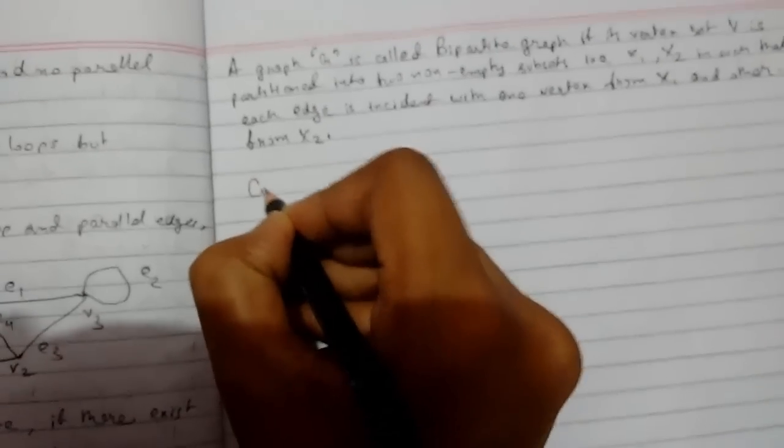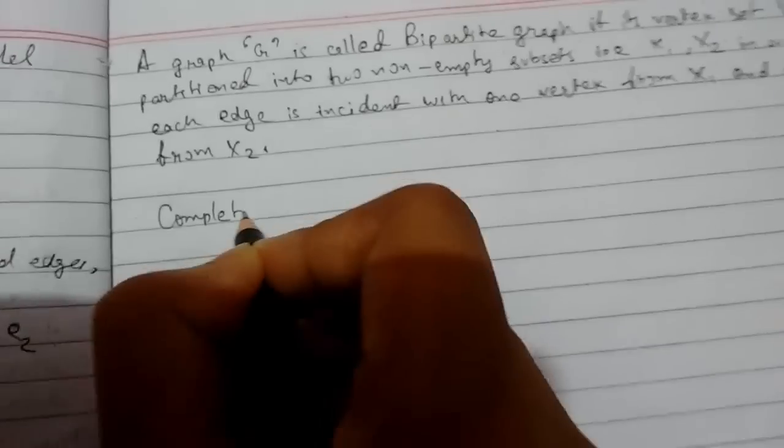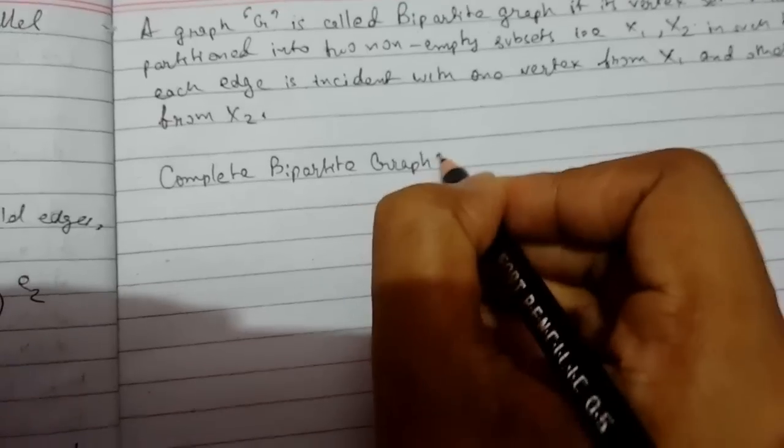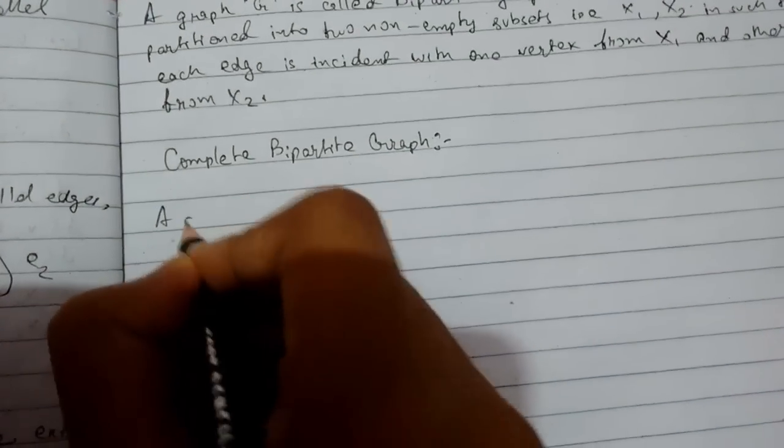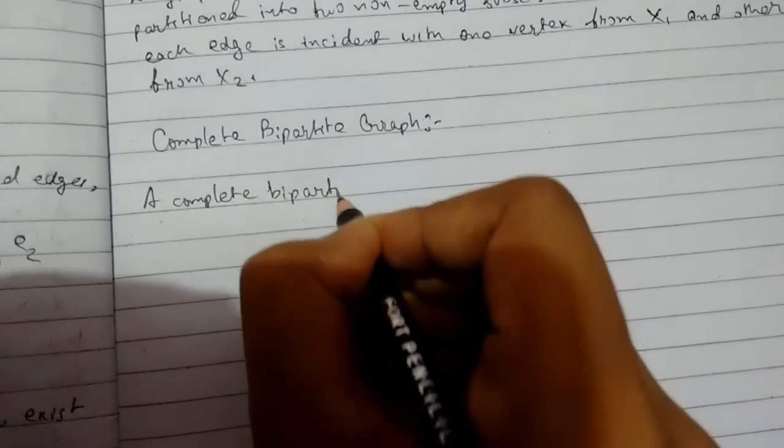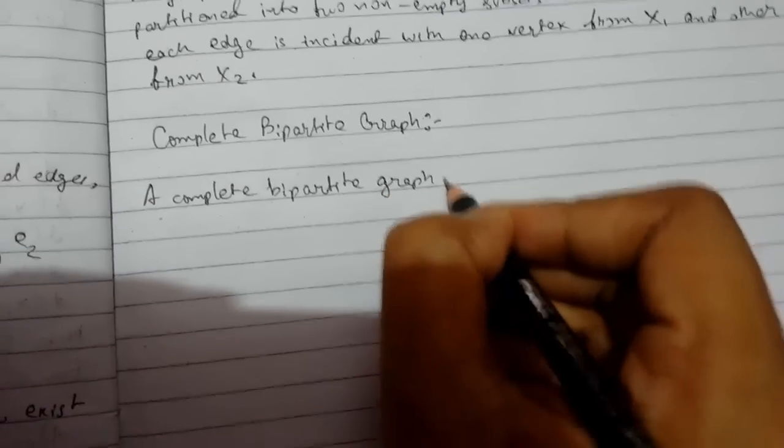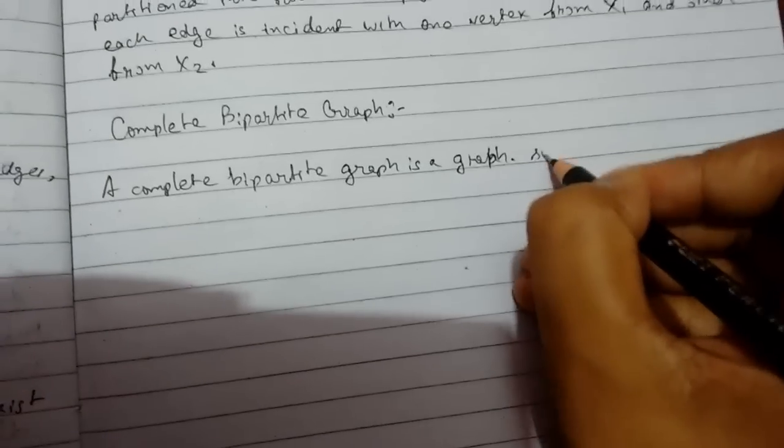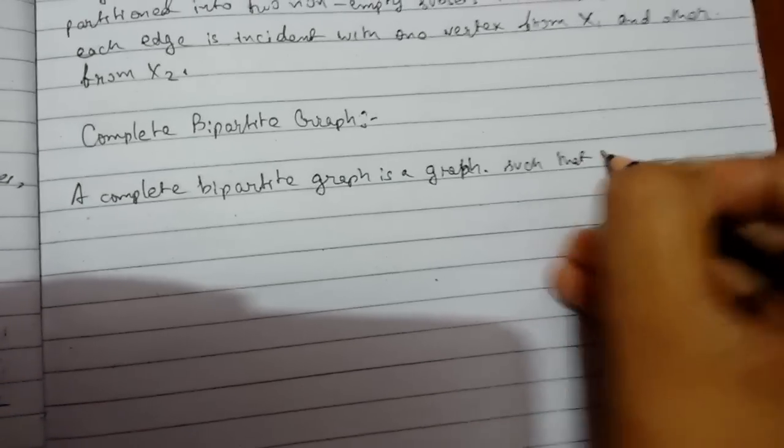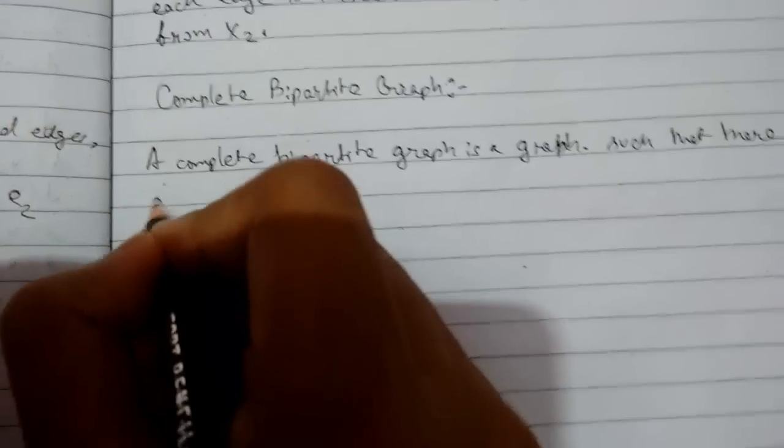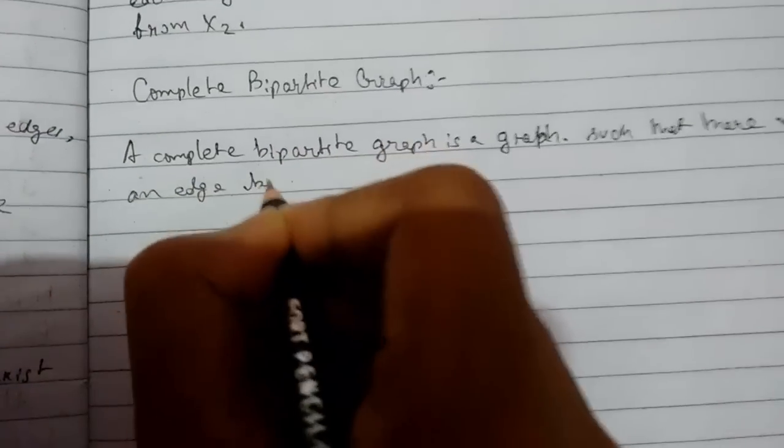Now we will see what is a complete bipartite graph. A complete bipartite graph is a graph such that there must be an edge between every vertex in x1 to every vertex in x2.